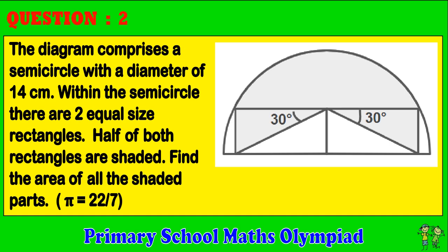Question 2. The diagram comprises a semi-circle with a diameter of 14 cm. Within the semi-circle there are two equal-size rectangles. Half of both rectangles are shaded. Find the area of all the shaded parts. Pi equals 22 over 7.